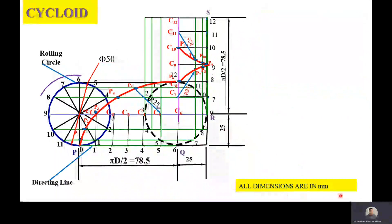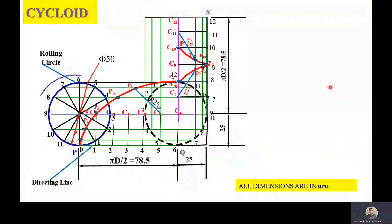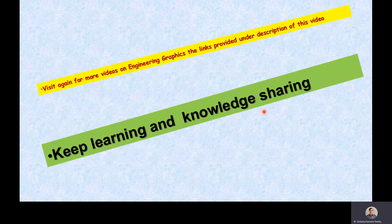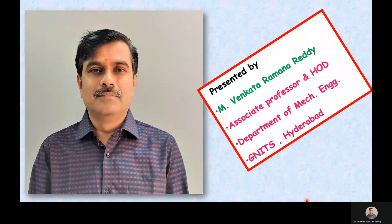All dimensions are in millimeters. Construction lines are drawn with a 3H pencil, dimensioning with a 2H pencil, and the required cycloidal curve with an H pencil. Visit again for more videos on engineering graphics via the links in the description. Keep learning and knowledge sharing, and mention any queries in the comment section.